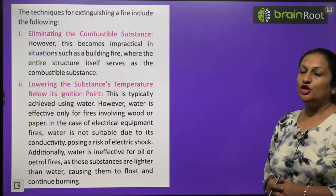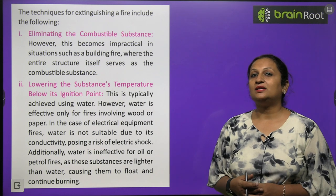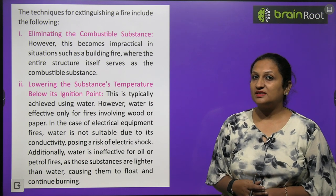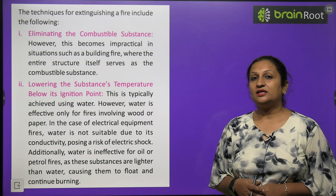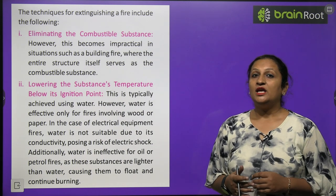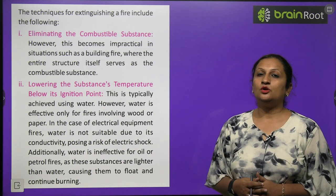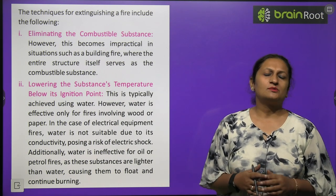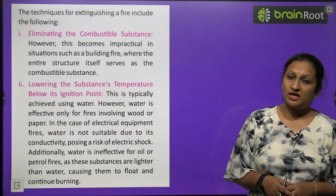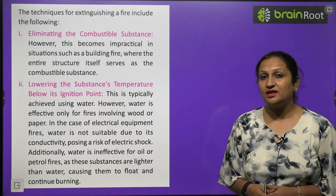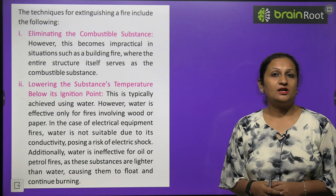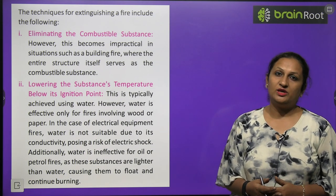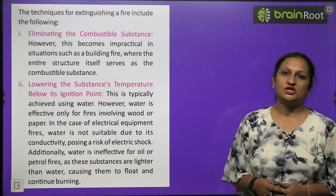To extinguish fire, we need to eliminate one of the three conditions: supply of air, presence of combustible substance, or ignition temperature. We can remove the combustible substance, cut off the oxygen supply, or bring the substance below its ignition temperature — any of these will extinguish the fire.